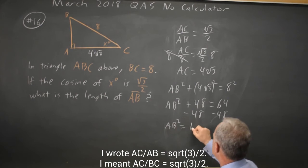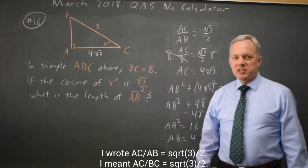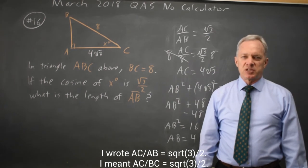AB squared equals 16. Square root of both sides, AB is the positive square root, which is 4, because we cannot grid in a negative answer, and a negative length would not make sense for the side of the triangle.